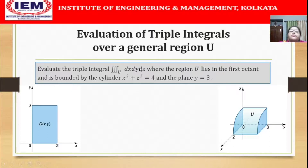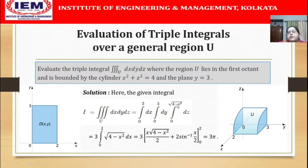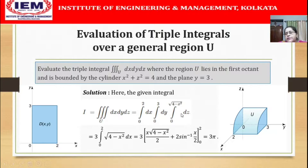With the limits identified, we write the triple integral of dx dy dz over U. We integrate with respect to z first, where z varies from the lower surface z = 0 to the upper surface z = √(4 - x²) from the cylinder. Then integrate with respect to y from 0 to 3, and with respect to x from 0 to 2. Integrating dz gives z evaluated at the limits, yielding √(4 - x²). The integral from 0 to 3 in dy simply gives a factor of 3.